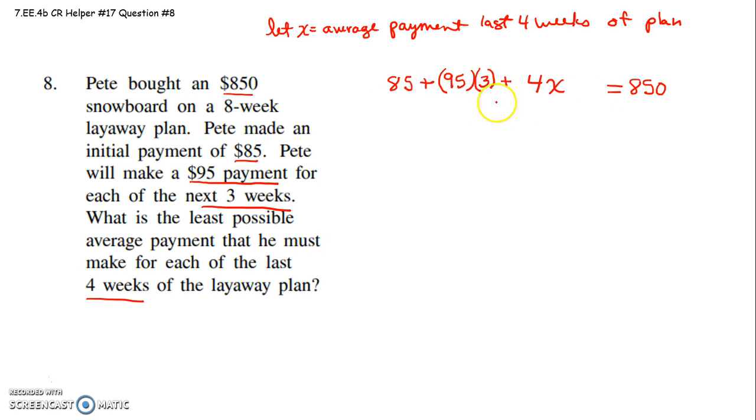So let's go ahead and solve this equation. First of all, I have to know what 95 times 3 is. So my scrap work would be 95 times 3. 5 times 3 is 15. 3 times 9 is 27, and one more is 28. So those weeks, he makes a total of $285 in payments.